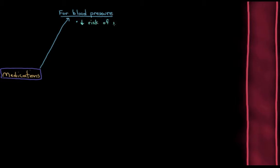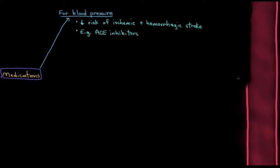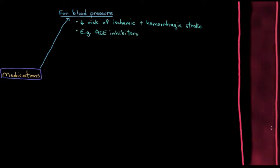A group of antihypertensives you might have heard of are the ACE inhibitors, which work by relaxing your blood vessels and reducing your blood volume. And that, in turn, lowers your blood pressure.